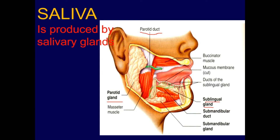The third variety is the submandibular gland. It is a slightly larger salivary gland, partly under the cover of the body of the mandible. It is also composed of mixed cells — both serous and mucus — but the serous-secreting cells are dominating. It has an S-shaped duct, visible in the picture, through which it drains its secretion.